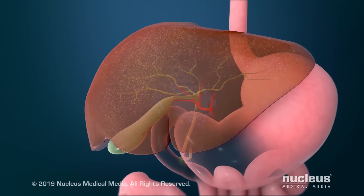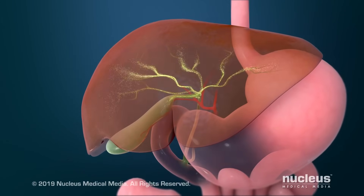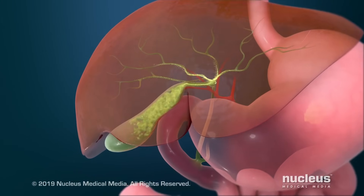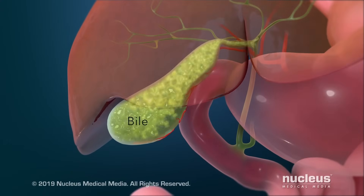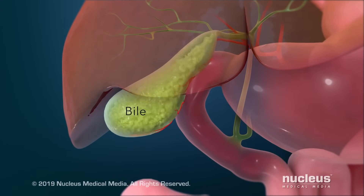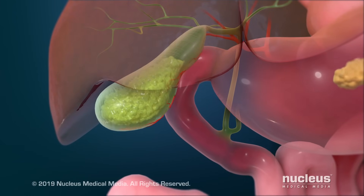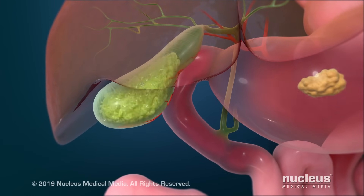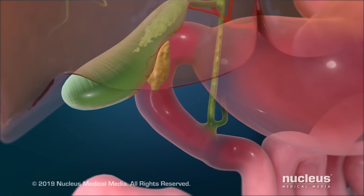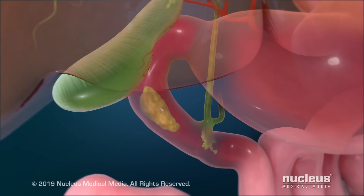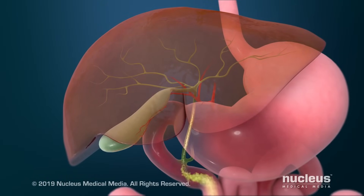These ducts merge together into one large duct that attaches to your small intestine. Your liver makes bile, a fluid that breaks down fat in food you eat. Between meals, most bile flows through the ducts into your gallbladder and is stored there. When you're eating fatty food, your gallbladder contracts to release the stored bile into your small intestine, and your liver releases more bile that flows directly to your intestine.